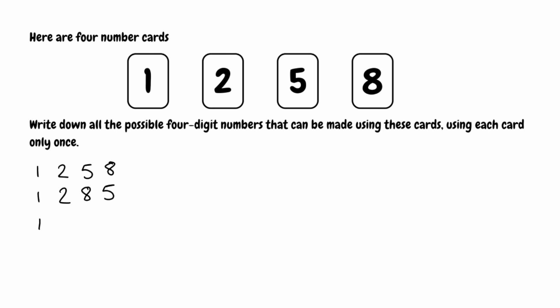Keeping 1 at the front, we move to the next highest number: 5 as the second digit, leaving 2 and 8. In order of size that's 1, 5, 2, 8, and swapping the last two gives 1, 5, 8, 2. Then with 1 and 8 at the front, the remaining digits 2 and 5 give us 1, 8, 2, 5, and swapping those gives 1, 8, 5, 2.